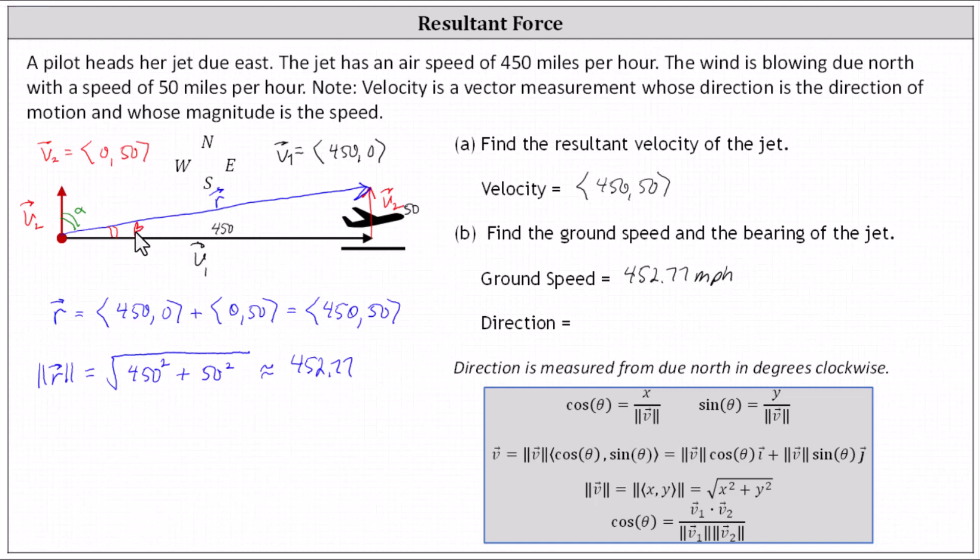We know the opposite side and the adjacent side. We can determine the angle beta using tangent. We know tangent beta is equal to the ratio of the opposite side to the adjacent side, which is 50 divided by 450, which simplifies to one ninth.